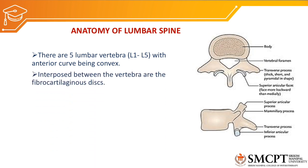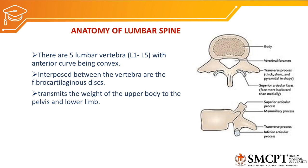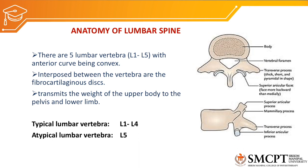In between these lumbar vertebrae there is a fibrocartilaginous disc called the intervertebral disc. This intervertebral disc along with the lumbar vertebral spine transmits the weight from the upper body to the pelvis and lower limb. Therefore the size of the lumbar vertebral body is the largest among all the vertebral spine. There are four typical lumbar vertebrae and one atypical lumbar vertebra — L1 to L4 are typical whereas L5 is atypical.